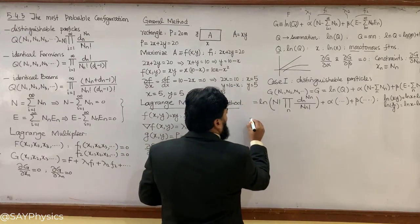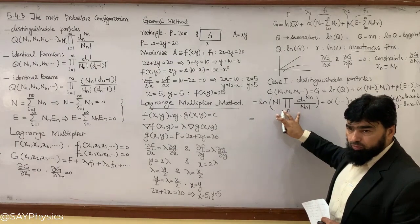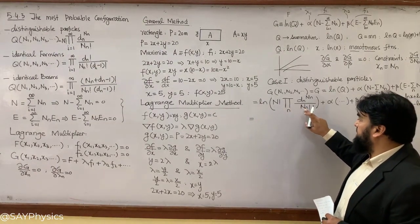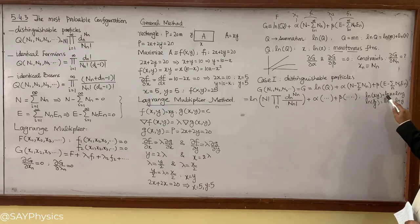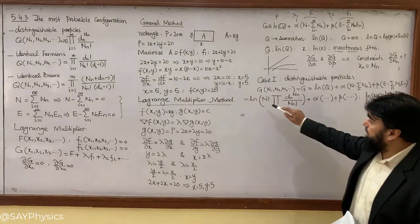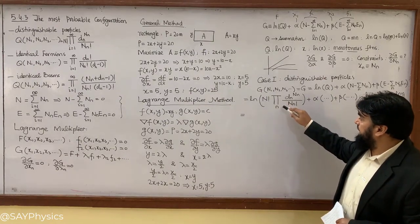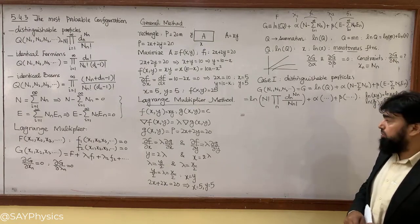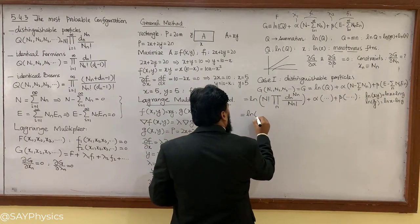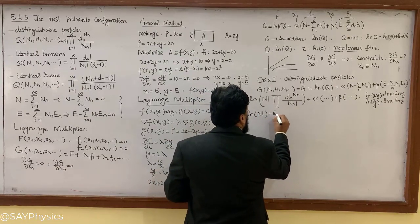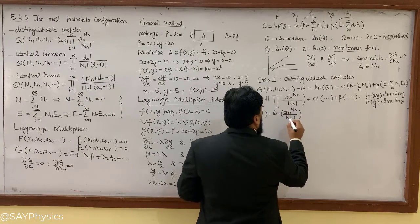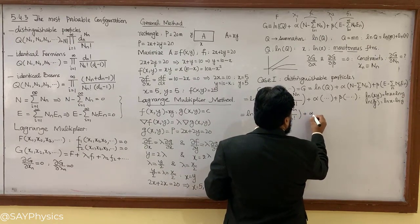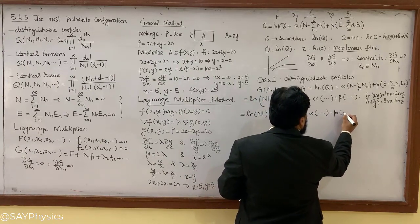Let's start here. These two terms are in product form, so we will write log of the product by applying log(XY) = log(X) + log(Y). So the first term becomes log of M factorial, plus log of D_N^(N_N) over N_N factorial. Plus the rest of the terms: alpha with the first constraint and beta with the second constraint.